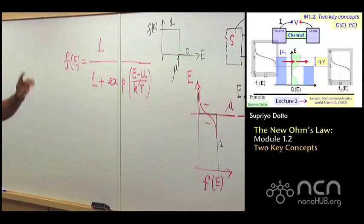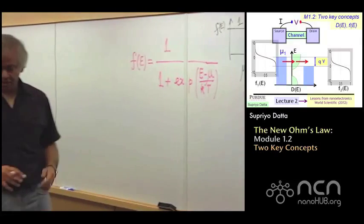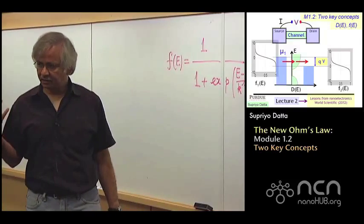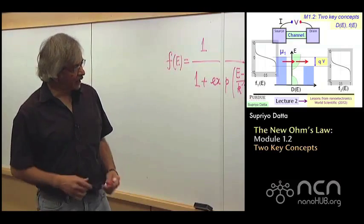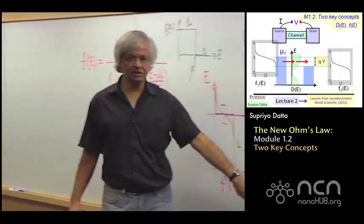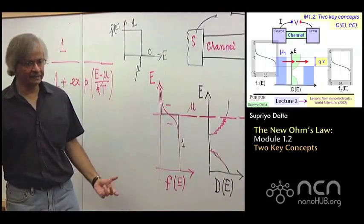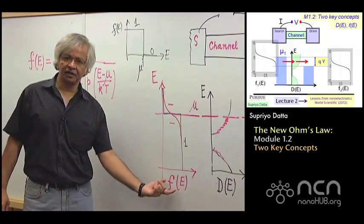So, these are the two important concepts that we need in order to discuss current flow. The first being this density of states, D of E. And the second, this Fermi function, F of E.